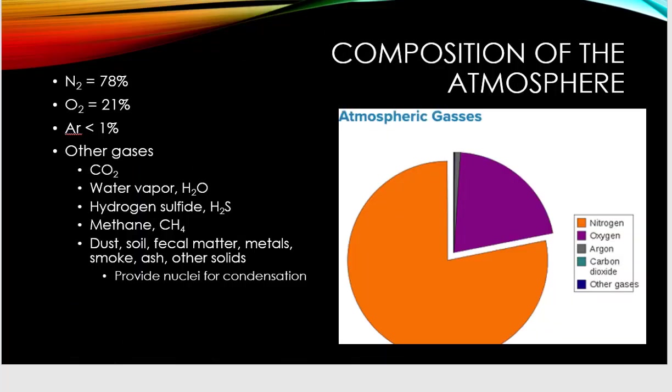Looking at the composition of the atmosphere: the major gas is nitrogen at 78%, we have 21% oxygen, then less than 1% argon, and then other gases like CO₂, water vapor, and methane that contribute to global warming and the greenhouse effect. Also there are dust particles and ash, which may act as particles where water can nucleate and cause condensation, eventually leading to precipitation.